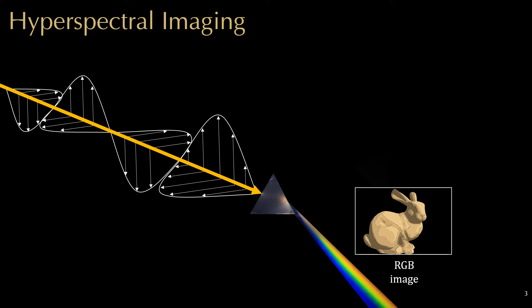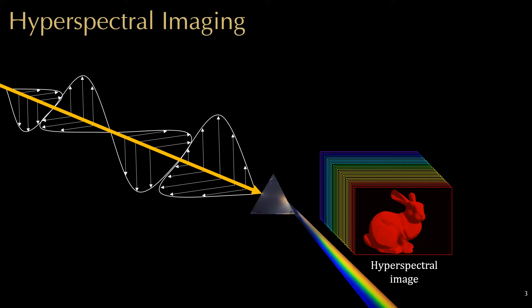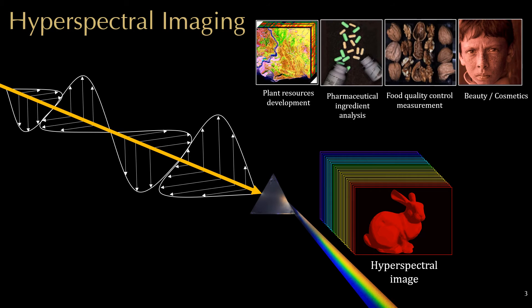On the other hand, hyperspectral cameras aim to capture the detailed spectral information of light waves. Instead of RGB images, they capture hyperspectral images, typically with more than 30 channels. This allows for deeper understanding of materials, used for geology, medicine, biology, food, and cosmetics.